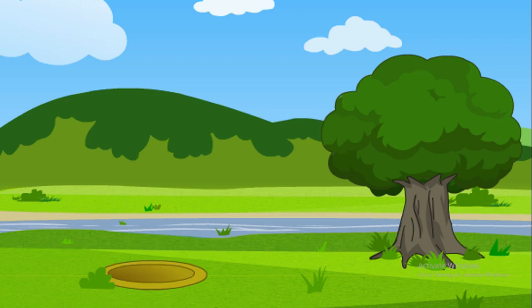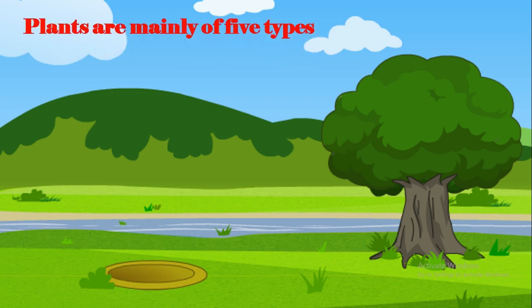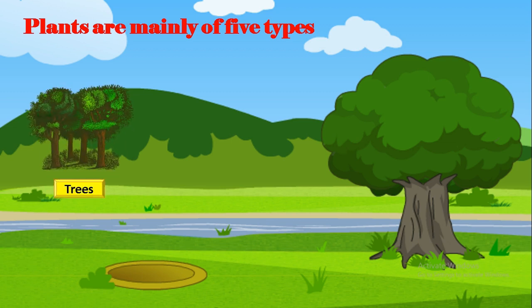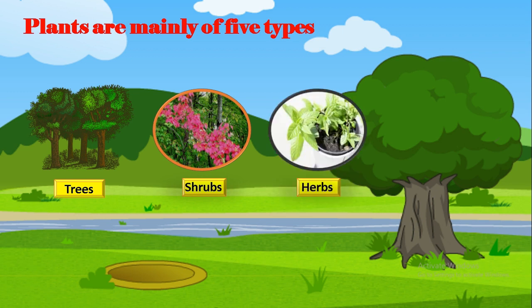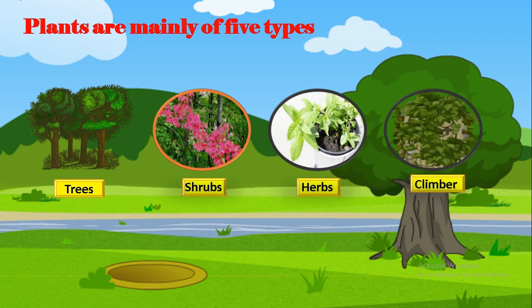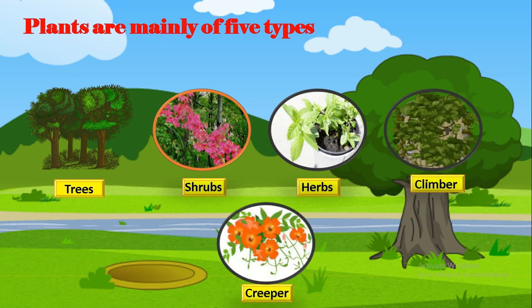Welcome to our channel Unique Study. Today we are here to discuss a new and fresh topic which is types of plants. Plants are mainly of five types. First one is trees, the tallest and strongest among all. Shrubs, herbs, climbers, and creepers.